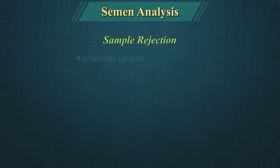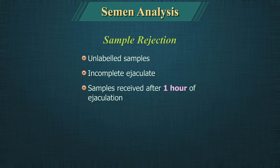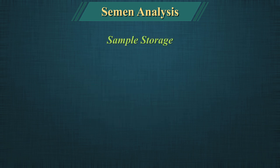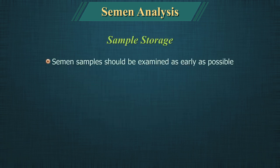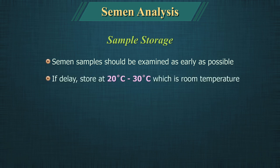Sample Rejection: Unlabeled samples, incomplete ejaculate, and samples received after 1 hour of ejaculation or inadequately transported samples should be rejected. Sample Storage: The semen sample should be examined as early as possible. If delay is likely, store at 20 to 30 degrees centigrade, which is room temperature.